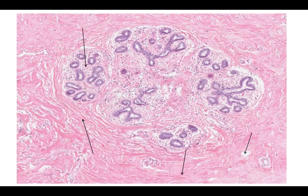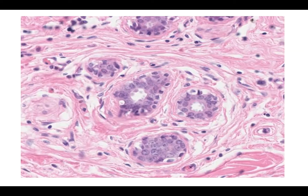You can also see blood vessels, lymphatics, and nerves in the interlobular stroma. The intralobular stroma surrounds the acini that are in the terminal duct lobular units. It appears looser than the interlobular stroma, as seen here.